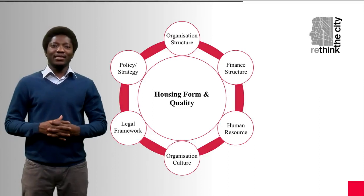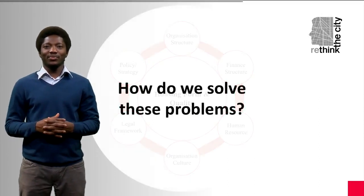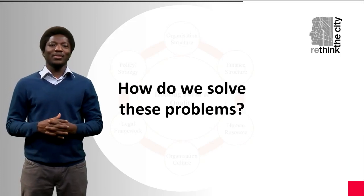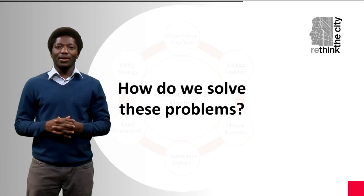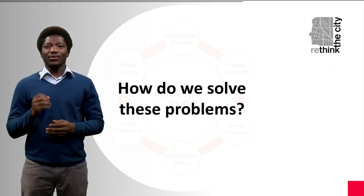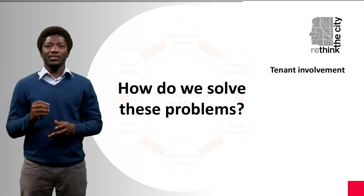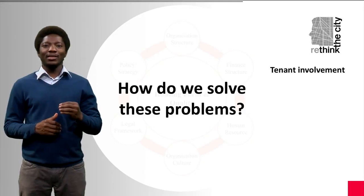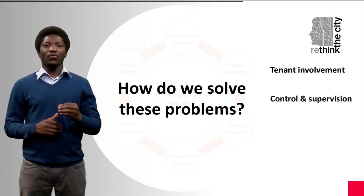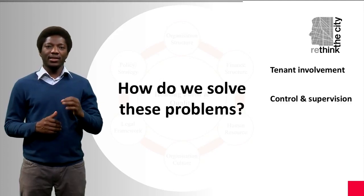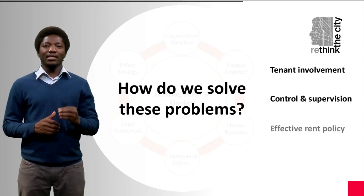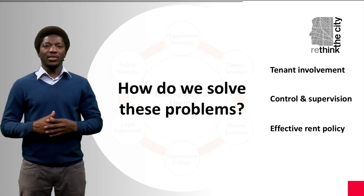Now that we have identified these challenges, the next question is how do you solve them? Studies in housing management present some ideas. First, by involving tenants, housing managers may be able to receive feedback for improving service delivery. Second, housing management must be organized to define clearly a hierarchy of control and supervision. And finally, effective rent policy — that is, rent setting and efficient rent collection — can improve availability of finance for management and maintenance.